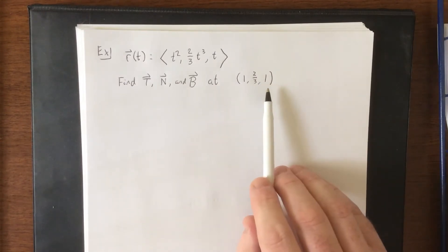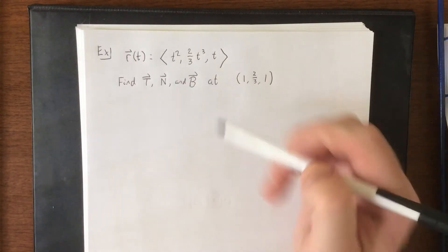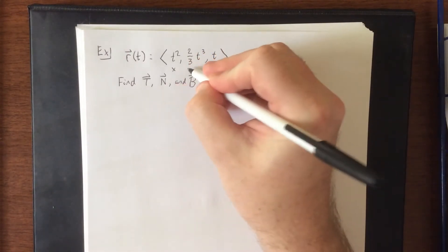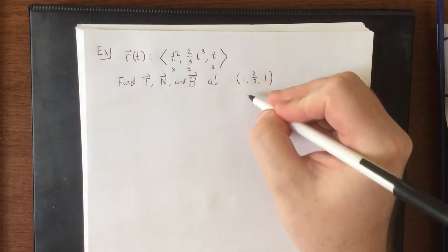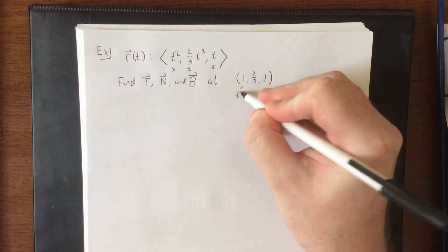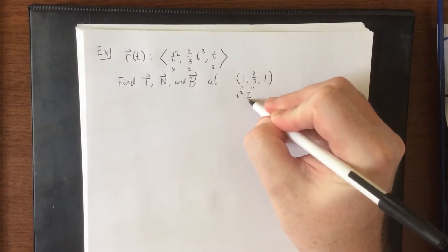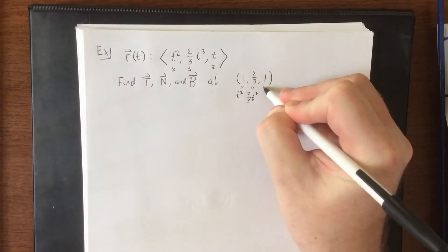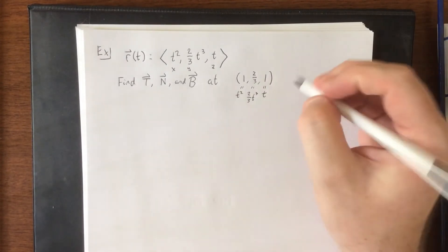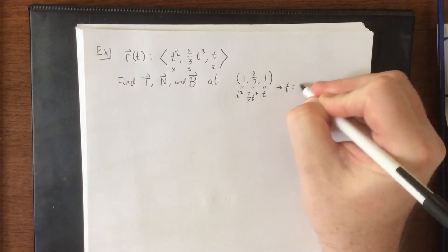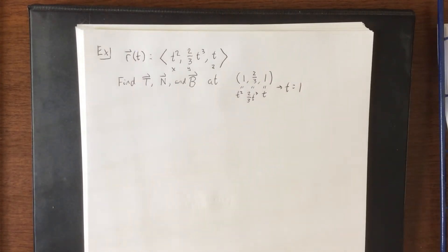So this is yet another situation where we were given a point instead of a value of t. So interpreting these component functions as x, y, and z, we'll set x equal to the x component, we'll set y equal to the y component, and we'll set z equal to the z component. If you're going to solve any of these, I would recommend solving the z component because, well, it's already done. So once we find our appropriate derivatives, magnitudes, and whatnot, we'll be plugging in t equals one.